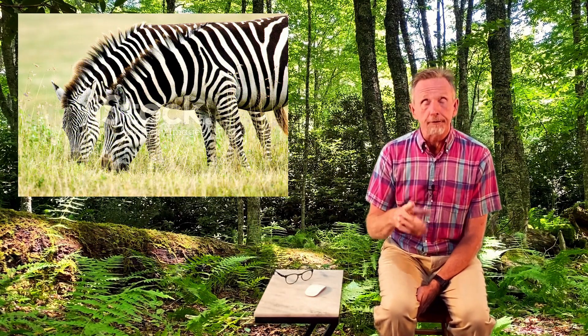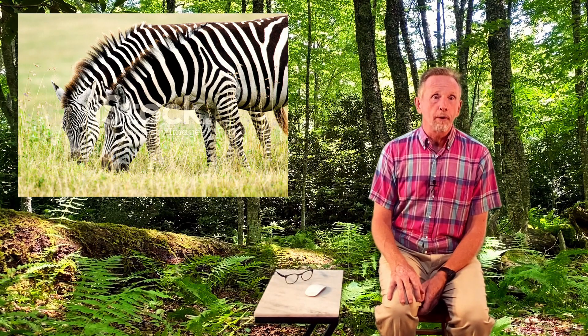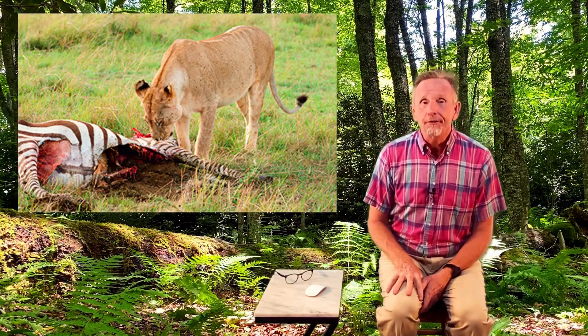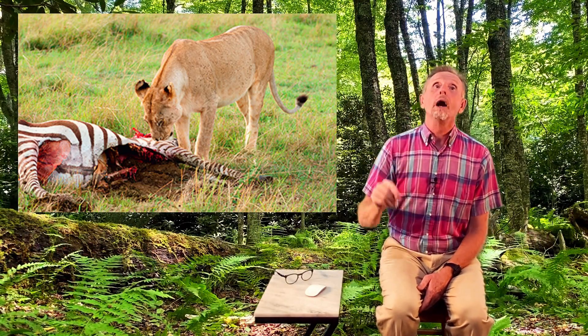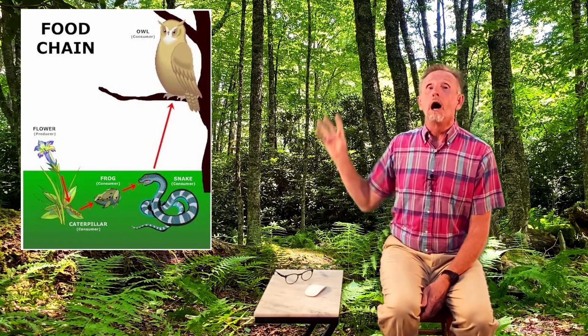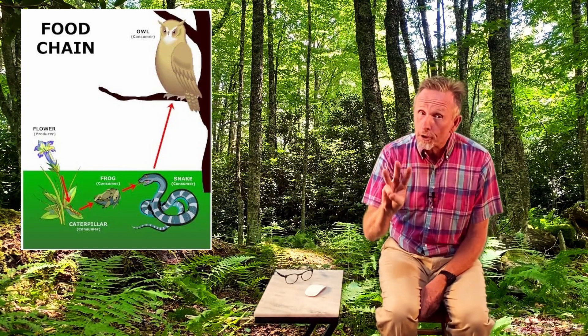Consumers can be broken down further. Primary consumers, also known as herbivores, only eat plants — like a cow or caterpillar. Secondary consumers, or carnivores, eat another consumer. For example: a caterpillar is a primary consumer; a frog that eats the caterpillar is a secondary consumer; a bird that eats the frog becomes a tertiary consumer.